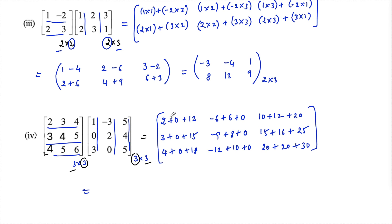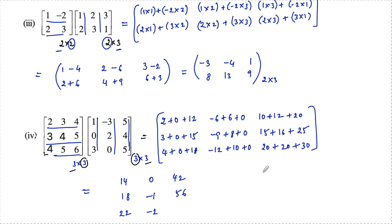So the resulting product matrix is: first row — 2 plus 12 is 14, 0, and 10 plus 12 plus 20 is 42; second row — 3 plus 15 is 18, negative 9 plus 8 is negative 1, and 15 plus 25 plus 16 is 56; third row — 18 plus 4 is 22, negative 12 plus 10 is negative 2, and 20 plus 20 plus 30 is 70. This is the 3 by 3 product for the fourth one.